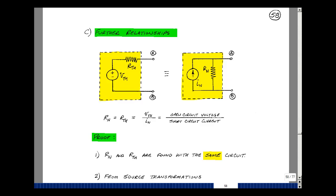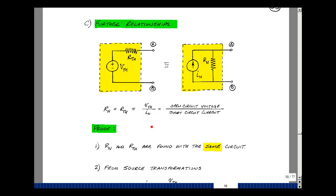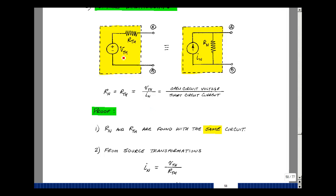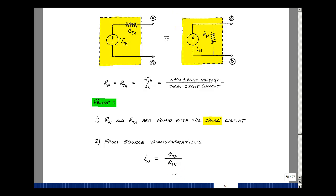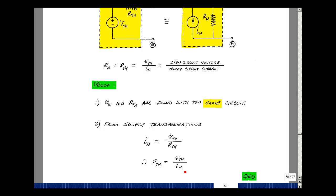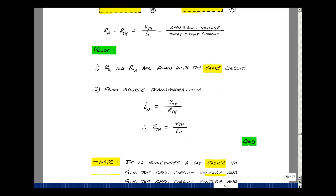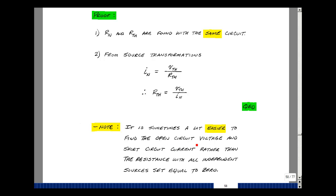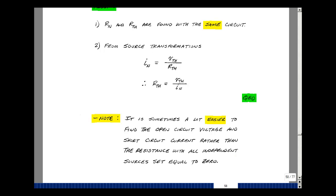R-Norton and R-Thevenin are found the same way — by setting all independent sources equal to zero and looking back into the box — so they are equal. Doing a source transformation: the Norton current equals the Thevenin voltage divided by the Thevenin resistance. R-Thevenin can be found via series and parallel combinations, Y-to-delta transforms, or by taking the ratio of the open circuit voltage to the short circuit current, which is sometimes easier. This will also be very useful in Chapter 4 when we encounter controlled sources. And that is Thevenin's and Norton's theorems and how to use them to characterize a circuit.